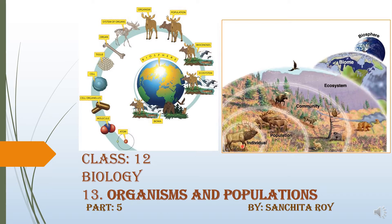I have discussed about different abiotic factors which are responsible for the distribution of individuals or populations in a particular area. Then in other videos I have discussed about the different attributes of the population, and the different types of population growth curves — that is the exponential and the logistic growth curve.